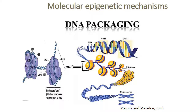Molecular epigenetic mechanisms: DNA packaging — how the DNA is packed by different condensation processes in a chromosome — is a molecular epigenetic mechanism. It condenses at different levels like 300, 700, 1100 and so on, and finally gets packed in a dense manner.